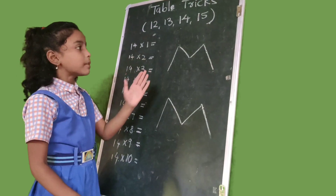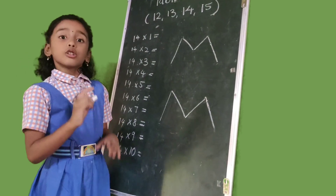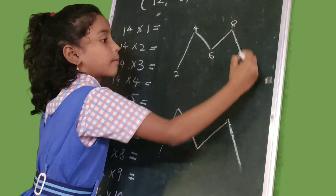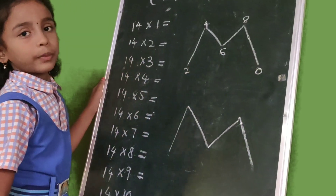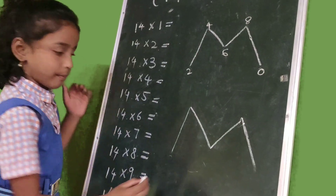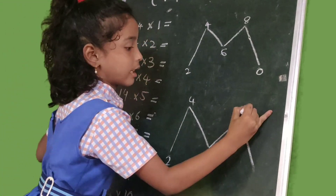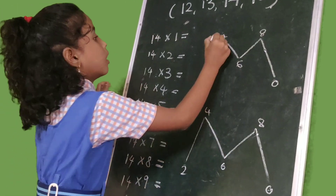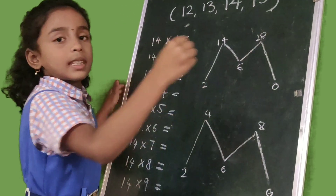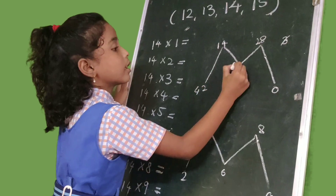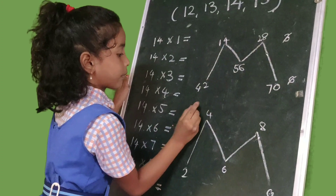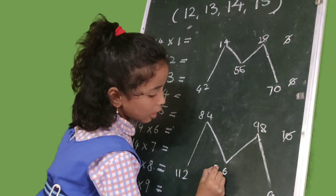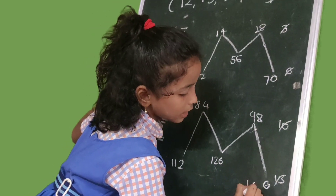14 table trick. We write the letter N in big size 2 times. Now we write 2 to 8 even numbers: 2, 4, 6, 8 and we write 0. And again write 2, 4, 6, 8 and we write 0. Now we write 1 to 14 numbers serially: 1, 2, skip 3, 4, 5, skip 6, then 7, 8, 9, skip 10, then 11, 12, skip 13, then write 14.